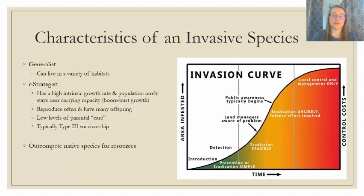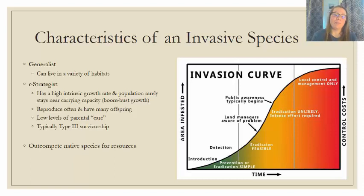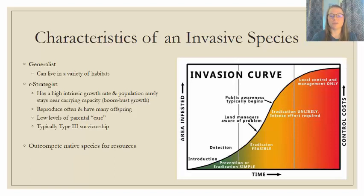There are some key characteristics of invasive species. Most invasive species are generalists — species that can live in a wide variety of habitats. They are frequently R-strategist species, meaning they produce many offspring with little parental care, and typically exhibit a type three survivorship curve. The main impact is that they out-compete native species for resources.